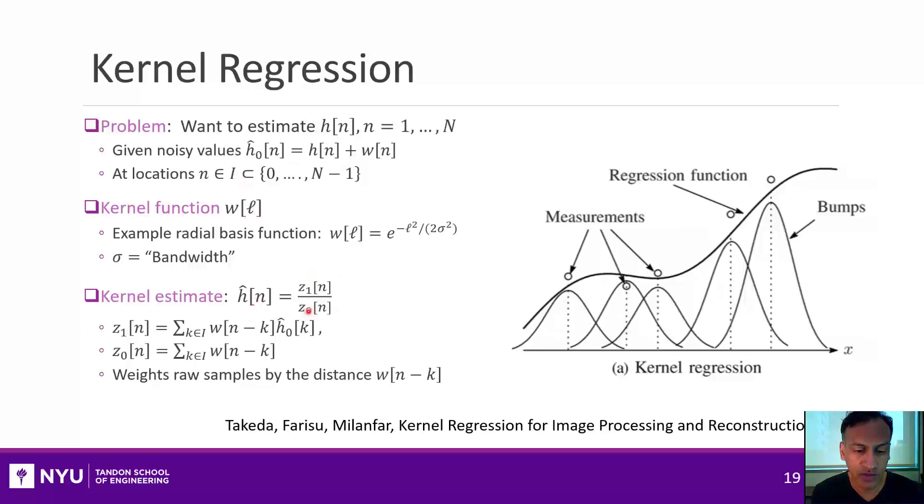So what this does is it kind of weights all these different raw, noisy measurements, and it weights them in such a way, because of this weighting function, which usually decays as this l grows larger. So it weights points that are close. And then this normalization kind of just makes sure that the weighting coefficients sum to one.